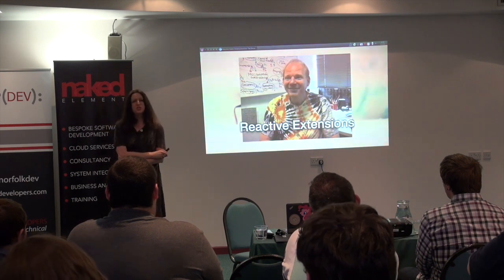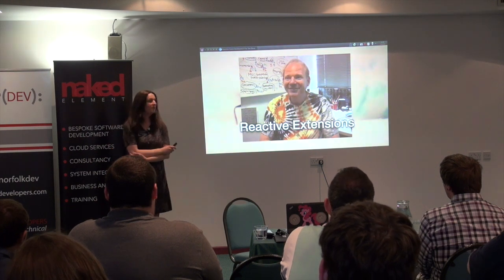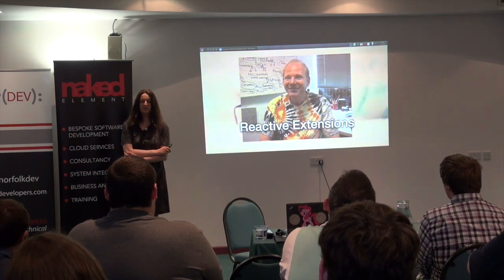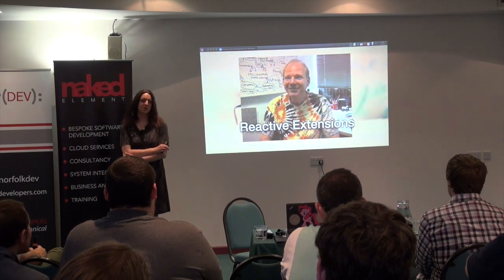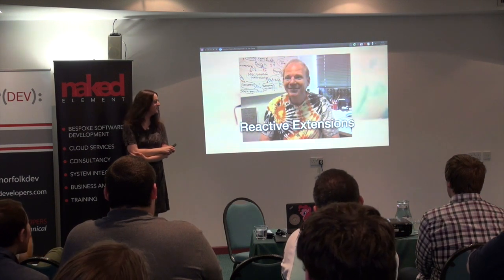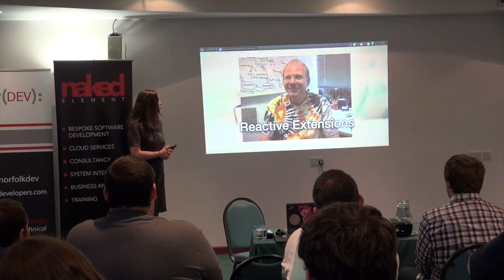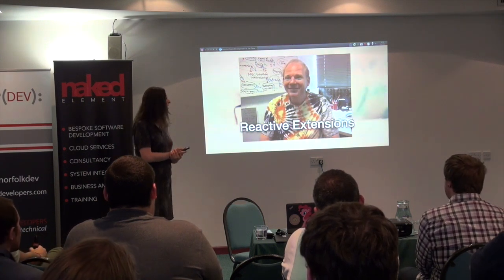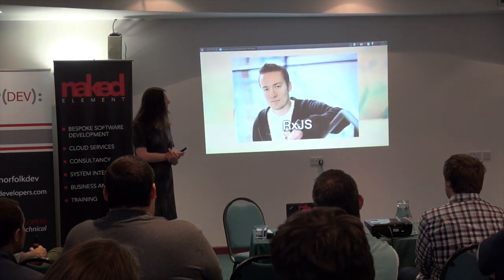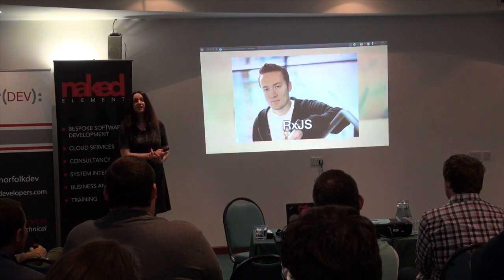Functional reactive programming is a very specific term in computer science, invented by this guy called Conal Elliott. He's been raging on the Internet at people writing allegedly functional reactive libraries, saying they're really not — they might be reactive and functional, but they're not 'functional reactive' in the precise sense. We have a particular implementation of reactive programming: reactive extensions, which started in C#, invented by Erik Meijer, an academic who's been working for Microsoft for several years.